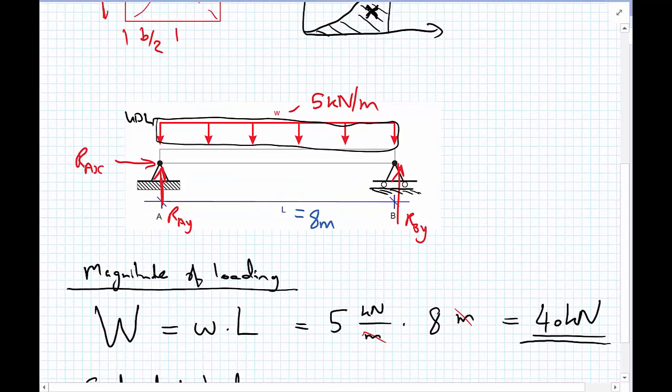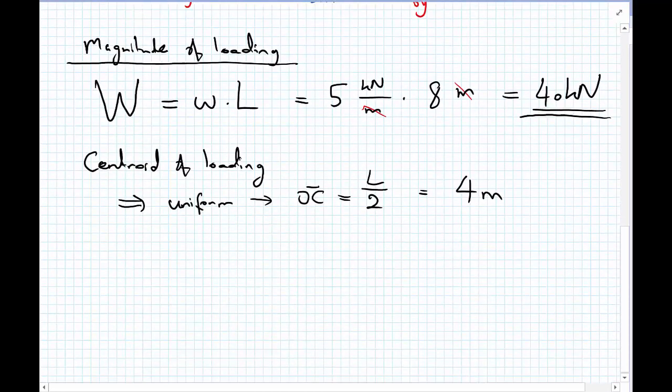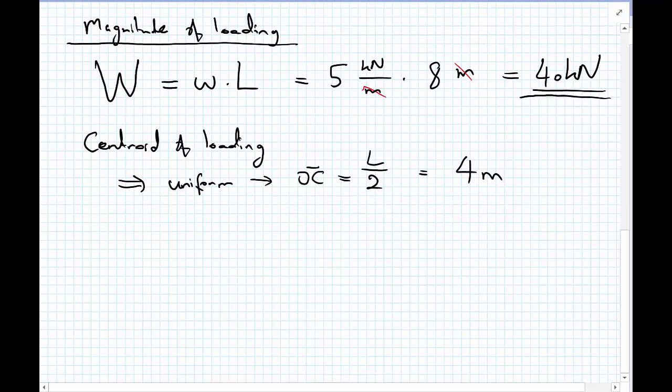So, we can get all of this loading here, 5 kilonewtons per meter, and assume it to be one big point load of 40 kilonewtons. We're going to redraw that neatly now. And using this point load, we can now go on to calculate our reactions.